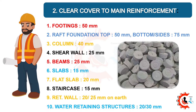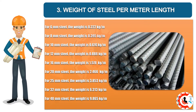Clear cover to main reinforcement: for footings is 50 mm; for raft foundation top is 50 mm and for bottom or sides is 75 mm; for columns is 40 mm; for shear walls is 25 mm; for beams is 25 mm; for slabs is 15 mm; for flat slabs is 20 mm; for staircases is 15 mm; for retaining walls is 20 or 25 mm on the earth side; for water-retaining structures is 20 or 30 mm.